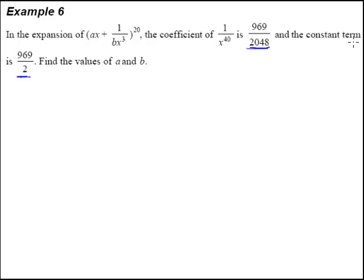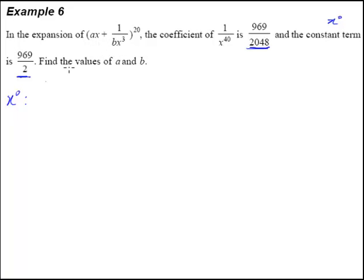The constant term is obviously the term that is x to the power of 0, which is the term independent of x. So let's start by first finding the constant term — that means finding the term with x to the power of 0. In this case, we have to use the general formula, because we have no idea at which position is the term with x to the power of 0.